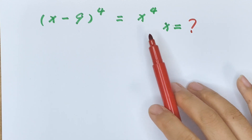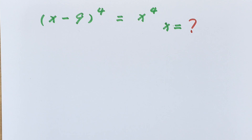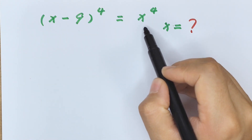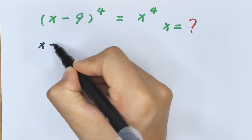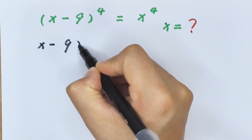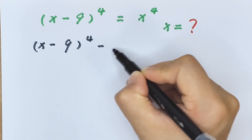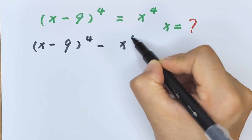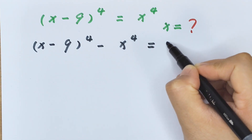To find the value of x, first we take this to the left side, so (x minus 9) to the power of 4 minus x to the power of 4 equals 0.